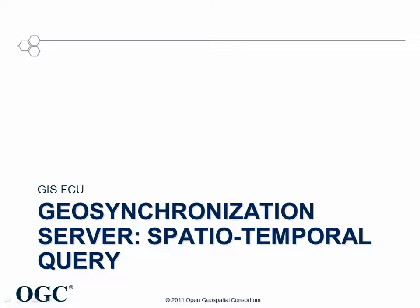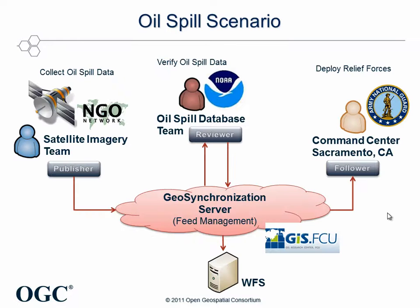The scenario assumes a fictitious earthquake that hits the Monterey Bay area causes a serious oil spill from a nearby oil well. Several agencies, including an NGO, NOAA, Feng Zhang University, and the Command Center of National Guard, synchronize the oil spill data and work together to perform the relief missions.